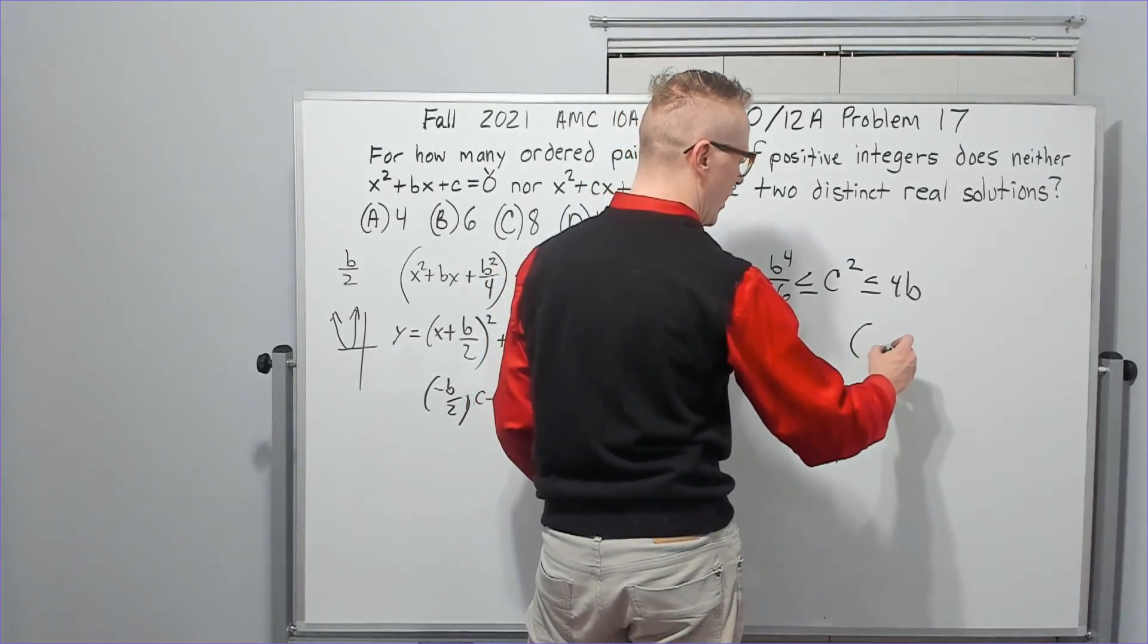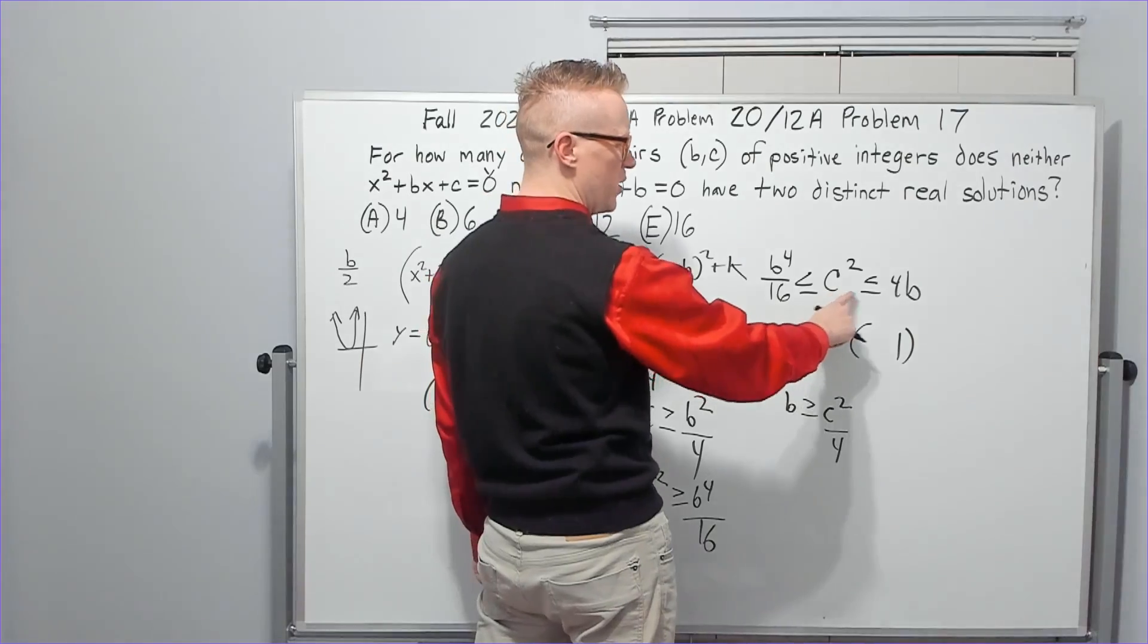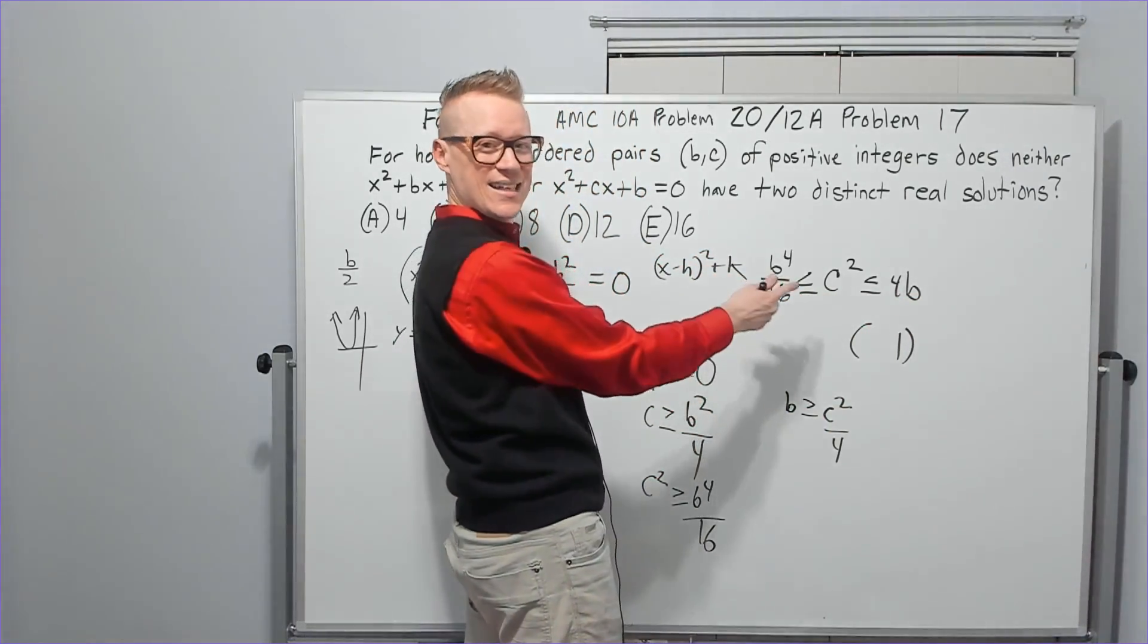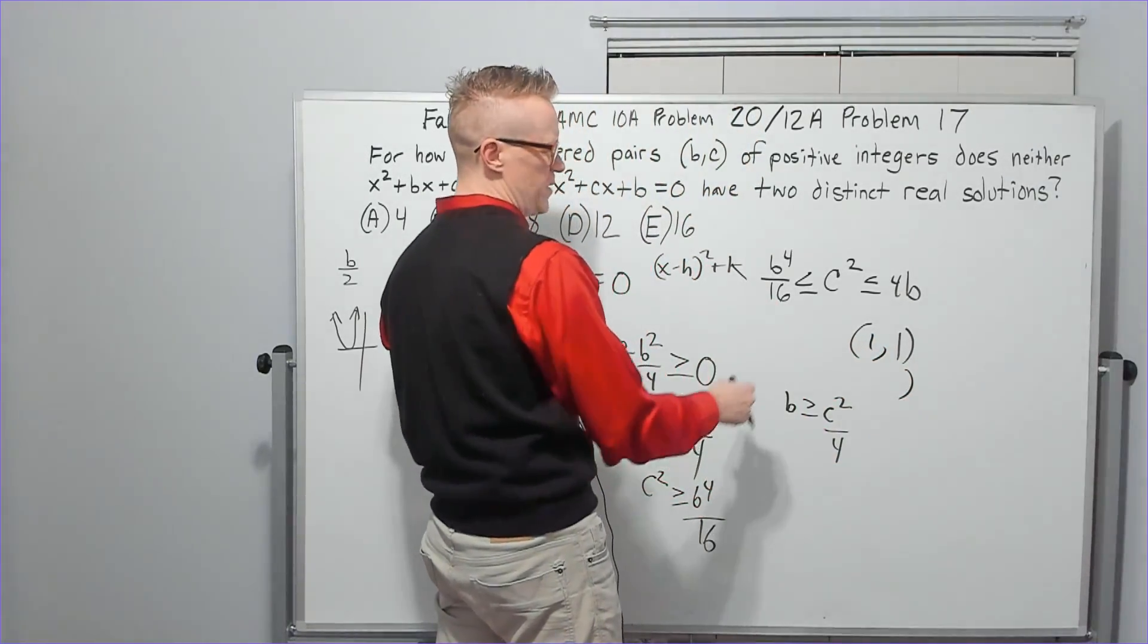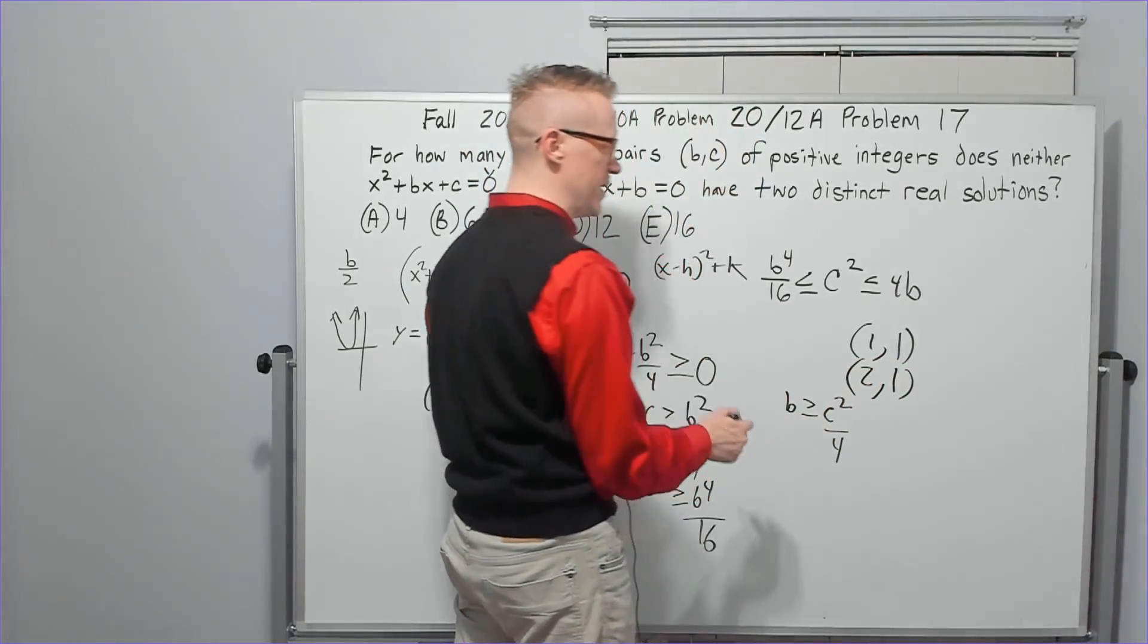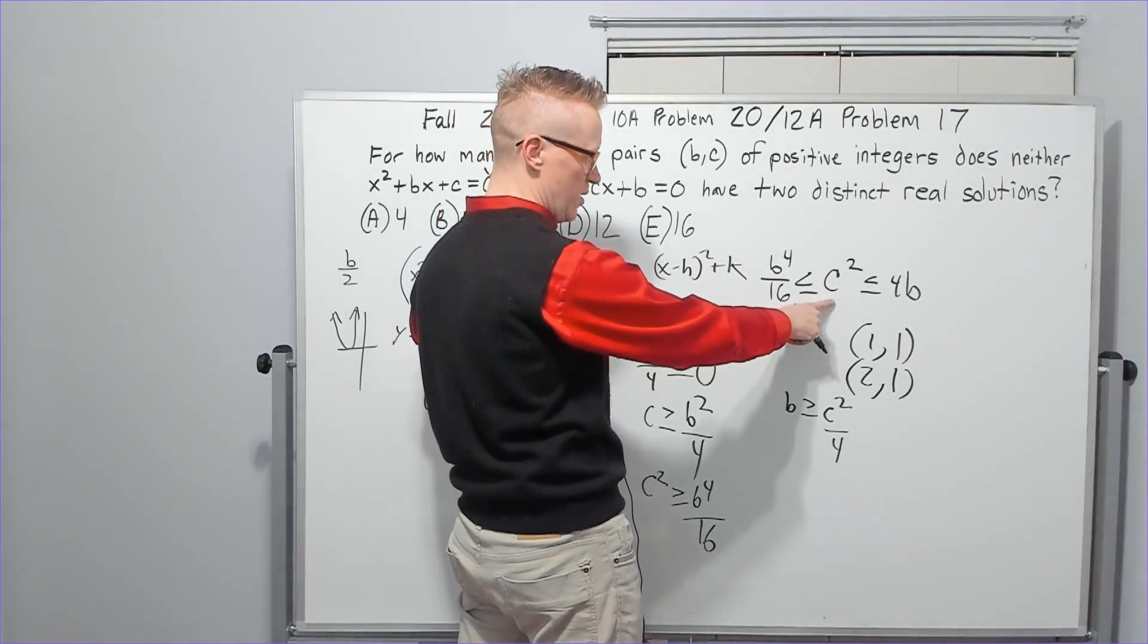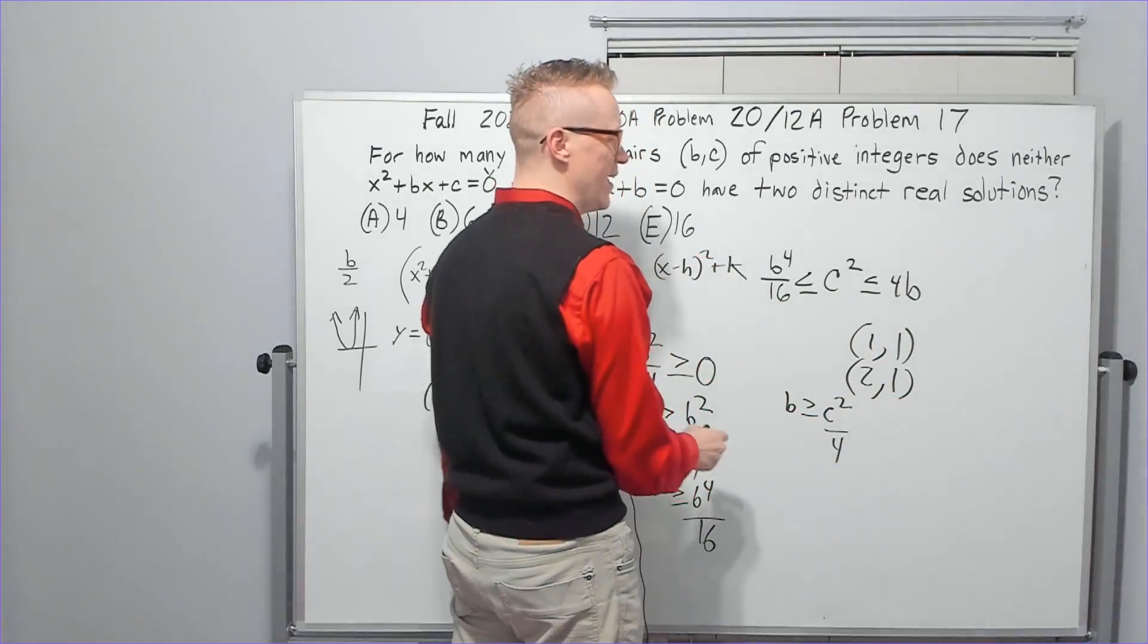I'm going to try 1, the first positive integer you can have. If c is 1, b could be 1, right? This would be 1/16th. That seems to work. What else? Could b be another value? Could b be 2? Yes. If you put 1 for c, b could be 2 because 16 over 16 is 1, which is less than or equal to 1, which is less than or equal to 8. That works.